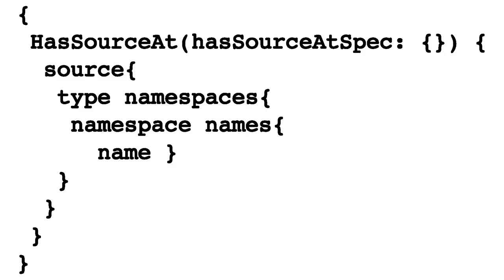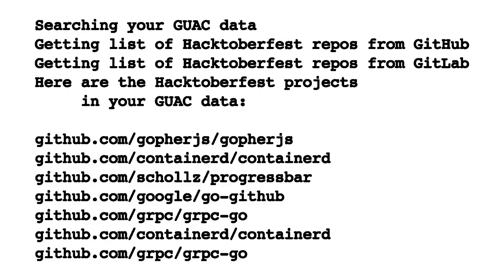With a simple Guac query, you can get all of the known source code locations for software in your dependency graph. To tie it all together, I wrote a Python script that queries GitHub and GitLab to get a list of projects participating in Hacktoberfest. It searches those results for your dependencies and prints a list of participating projects.